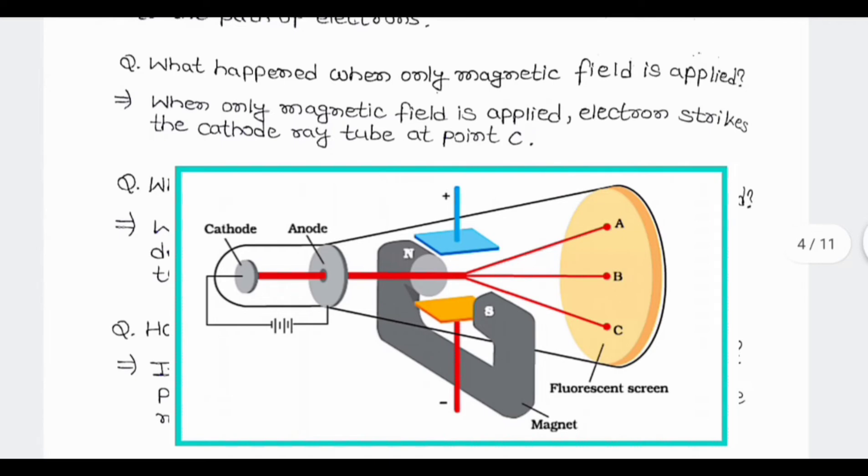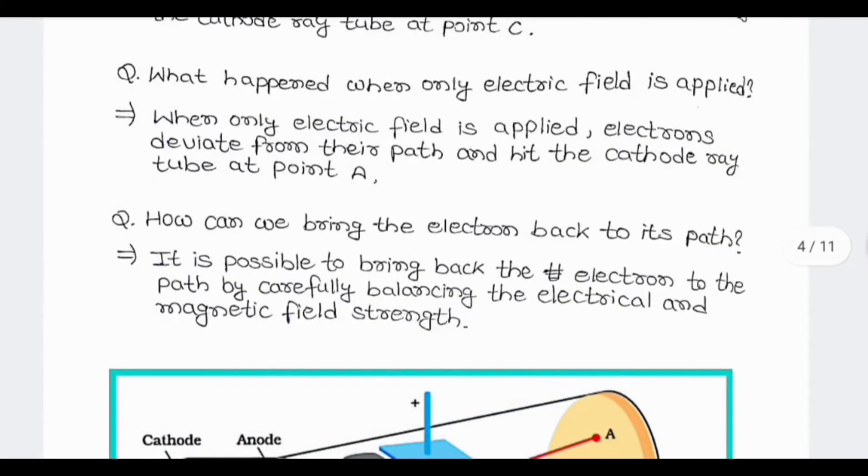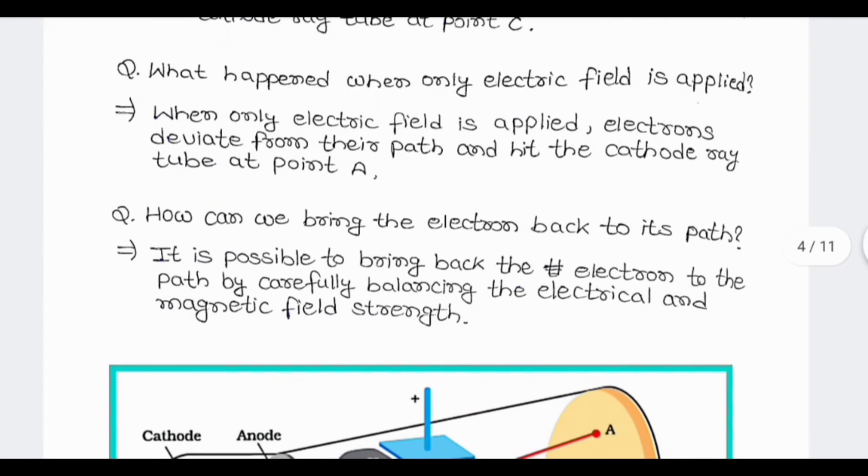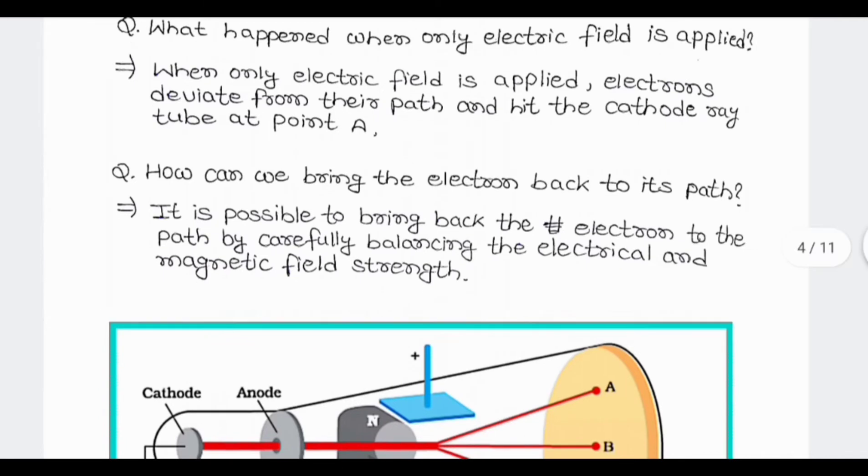What happens when only magnetic field is applied? When only magnetic field is applied, electron strikes the cathode ray tube at point C. What happens when only electric field is applied? When only electric field is applied, electron deviates from their path and hits the cathode ray tube at point A.